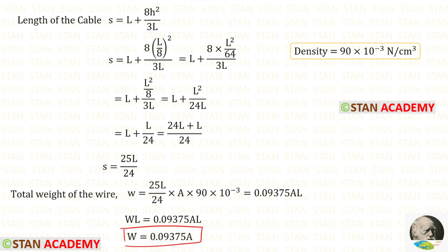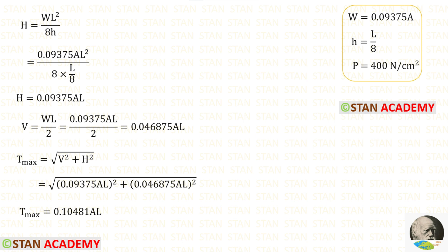In a cable supported on the same level and carrying uniformly distributed load, the formula to find the horizontal thrust H is WL² upon 8h. For W, we can apply this and for h, we can apply L upon 8. We can eliminate 8. Also we can eliminate L and square. Finally for H, we will get this.